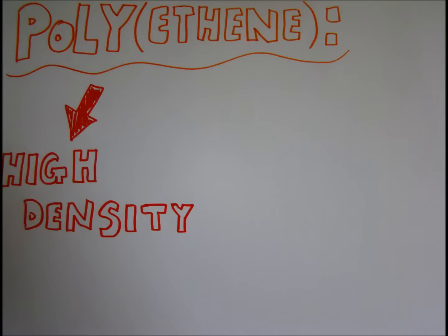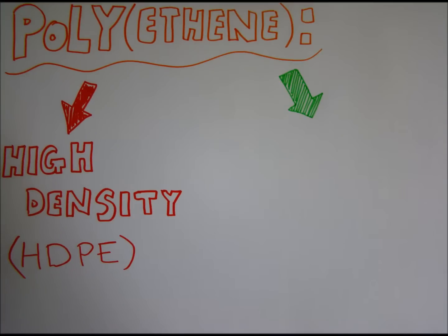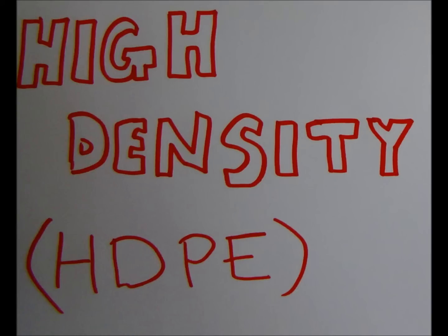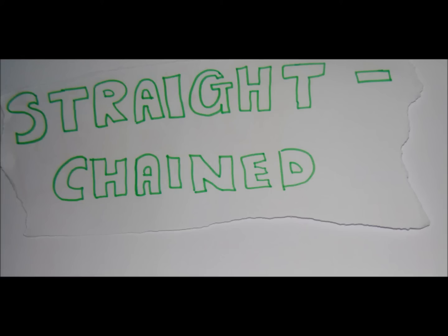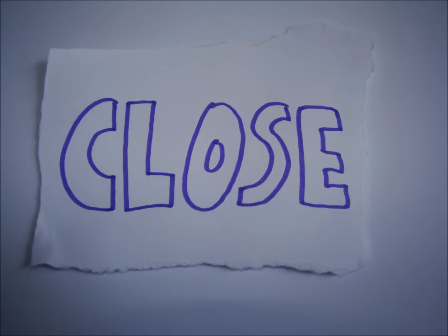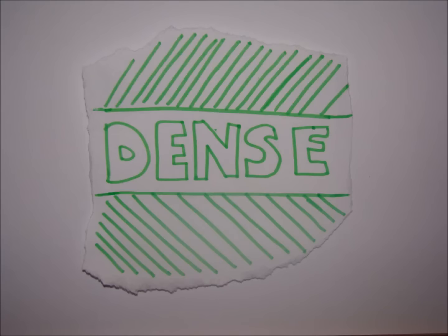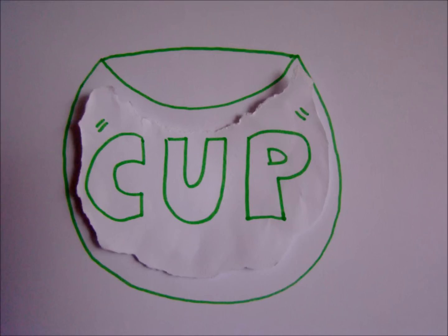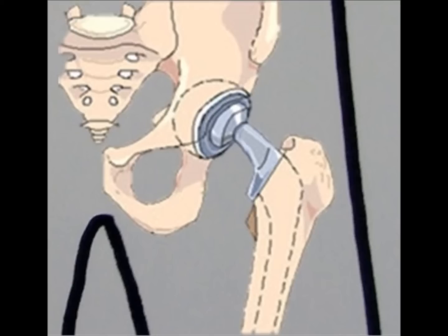Polyethene has two different forms: high density and low density. High density polyethene is made of long straight chain polymers which align and pack closely together, making a dense, strong material used to make the cup in artificial hips.